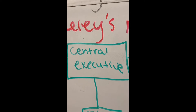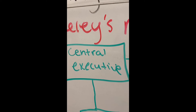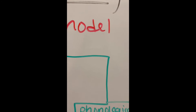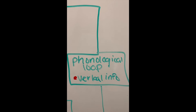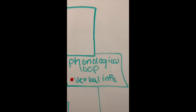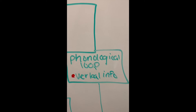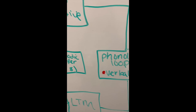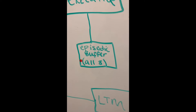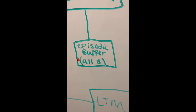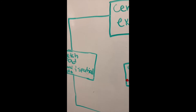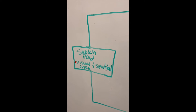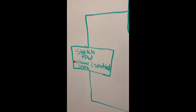The central executive system is the supervisory control of the system. The phonological loop is the transient storage of verbal representations, which maintains active memory via rehearsal mechanism. The visual-spatial sketchpad is the transient storage of visual and spatial information and also maintains active memory via rehearsal mechanism. The episodic buffer is for transient storage of both verbal information and visual and spatial representations.